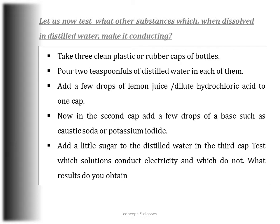Let's see what other substances, when dissolved in distilled water, make it conducting. Take three clean plastic or rubber bottle caps and pour two teaspoonfuls of distilled water in each. Add a few drops of lemon juice or dilute hydrochloric acid in the first cap, a few drops of caustic soda or potassium iodide in the second cap, and a little sugar in the third cap. Mix well and test which solutions conduct electricity.